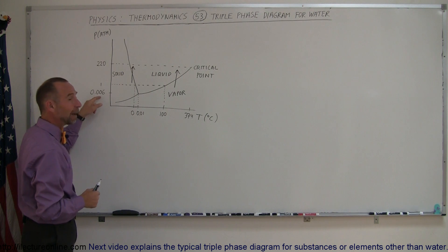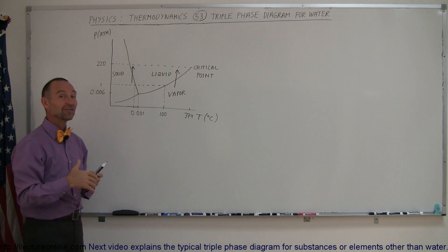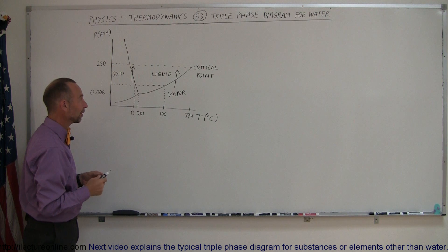Also, what's interesting about this, this is about the atmospheric pressure of Mars. So Mars could have situations where water can exist in the liquid, the solid, and the vapor phase all at the same time, or very nearly so.